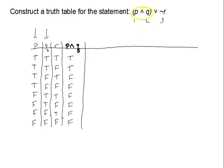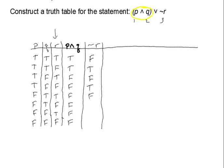Next, I need to take care of the statement negation R, so I'm going to do a column for squiggly R, the negation of R. The negation is my favorite one to do because you're just switching the truth value. Column R goes true, false, true, false, true, false, true, false — so negation R goes false, true, false, true, false, true, false, true.